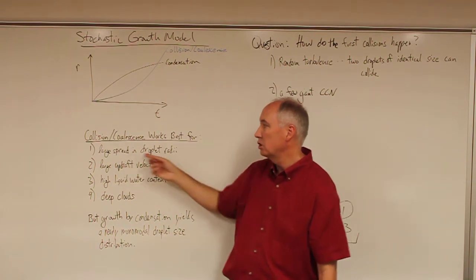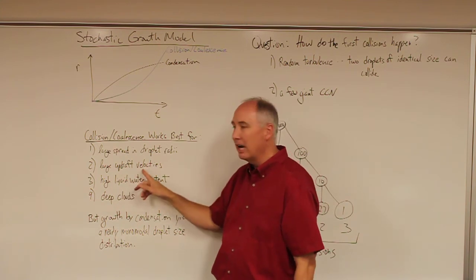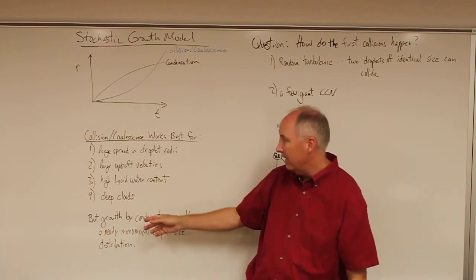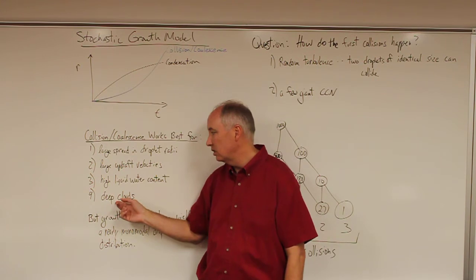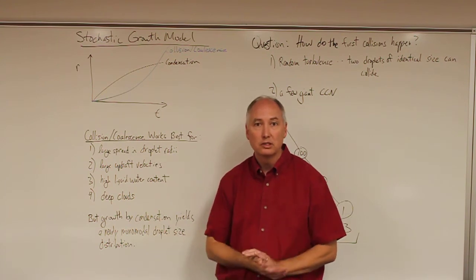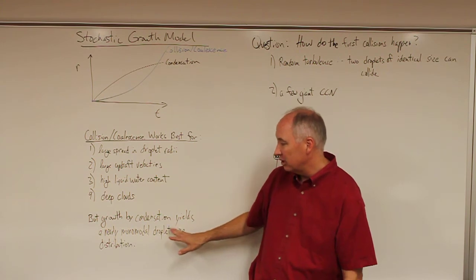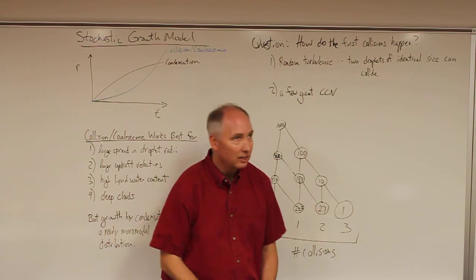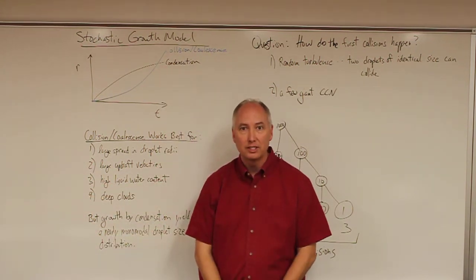Collision coalescence needs a polydispersed droplet size distribution, which it doesn't get. To review, collision coalescence works best for a large spread in droplet radii — the polydispersed situation — a large updraft velocity, and a high liquid water content. The large updraft velocity and high liquid water content are related to the depth of the cloud; deep clouds will produce the largest rain droplets in the quickest amount of time. The problem is that growth by condensation yields a nearly monomodal droplet size distribution, which raises the chicken-or-the-egg question: how can we start the collision coalescence mechanism if all droplets are initially the same size?